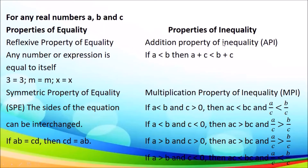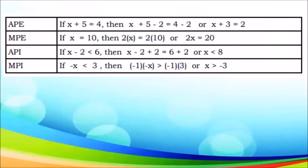In properties of inequality, the addition property of inequality means what we add on both sides applies equally. For example using the addition property of equality: if X plus 5 equals 4, then if we add both sides by negative 2 — that is, subtraction property — this becomes X plus 5 minus 2, or simplified, X plus 3 equals 2, since 5 minus 2 is 3 and 4 minus 2 is 2.